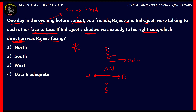Since Indrajeet is facing Rajiv face to face, and Indrajeet is facing North, Rajiv — who is opposite him — would be facing South. So South turns out to be the right option. Option 1 (North) is Indrajeet's direction, West is the sun's direction, so those are incorrect. Option 2, South, is the correct answer.